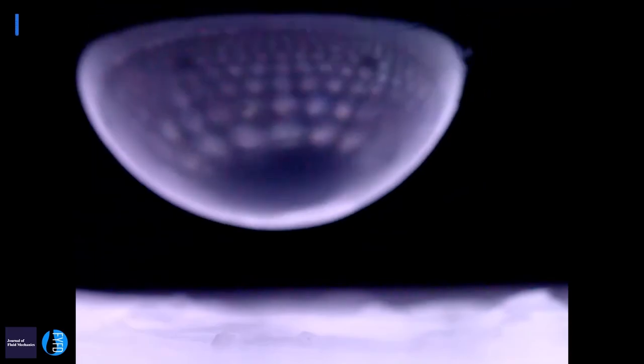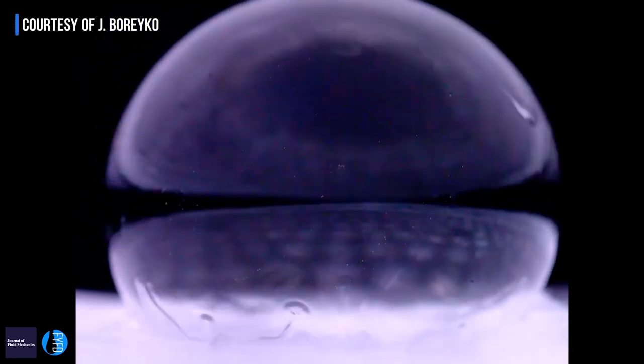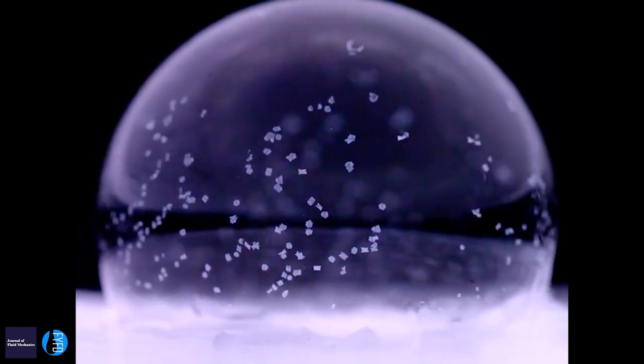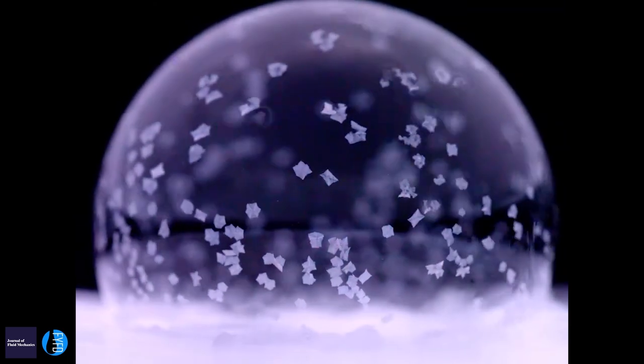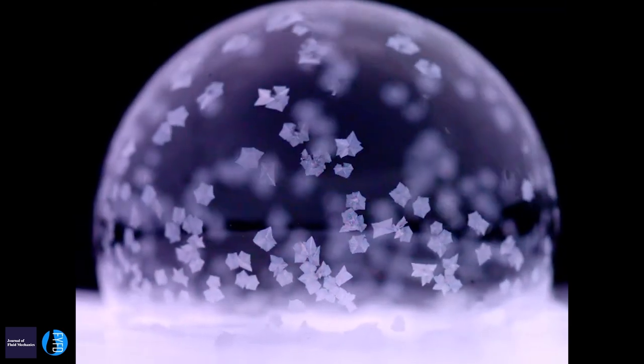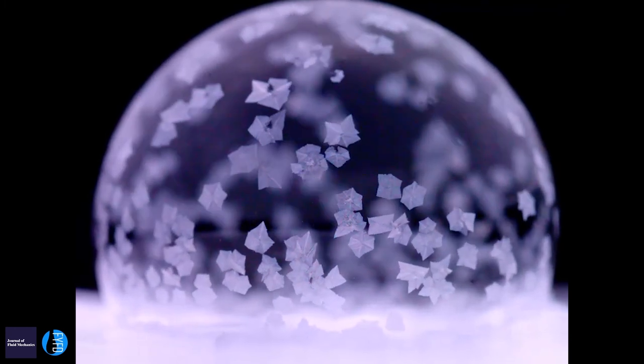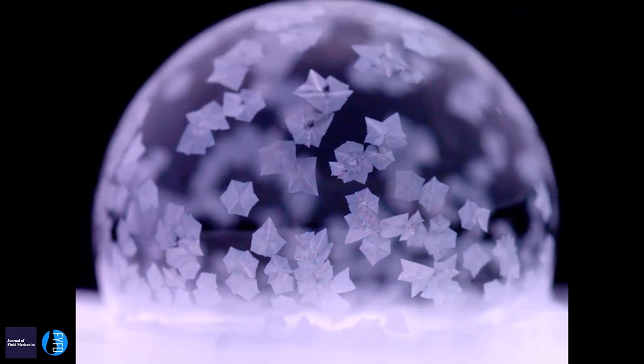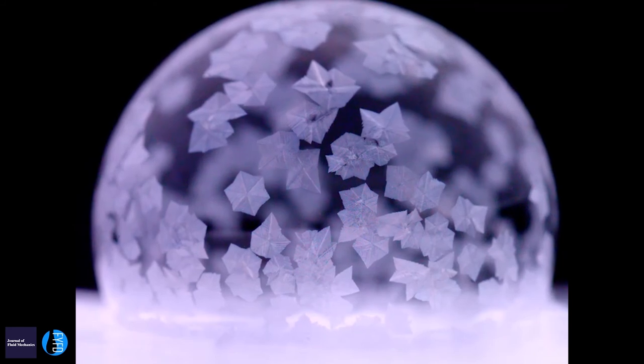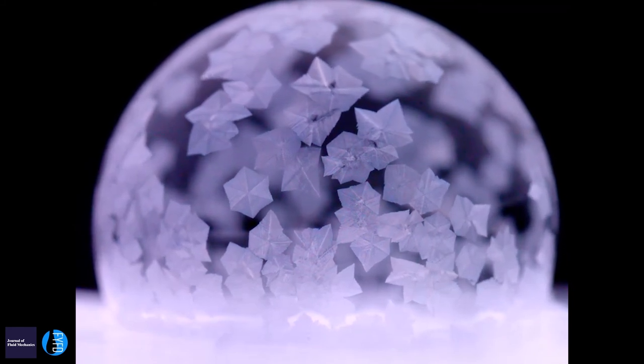When you freeze a bubble in uniform temperature conditions like in a freezer, you can turn a bubble into a snow globe. If you put the bubble on a block of ice, the ice will initially grow on the bottom part of the bubble. But as liquid freezes into ice, you are depositing heat into the surrounding liquid. Because a bubble is so thin, it can't spread that heat around, so all the heat from the freeze front is getting trapped in the bottom of the bubble.